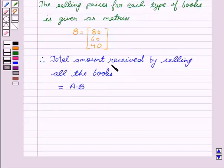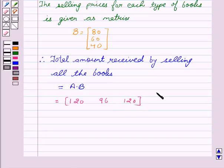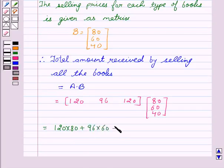Therefore, total amount received by selling all the books is equal to A times B, which is 120, 96, 120 multiplied by 80, 60 and 40. This is equal to 120 into 80 plus 96 into 60 plus 120 into 40.